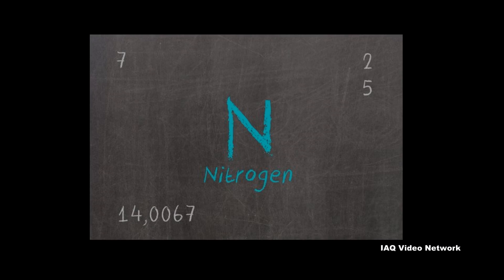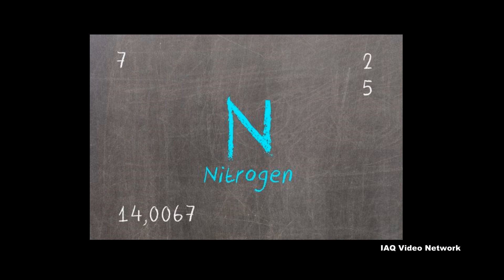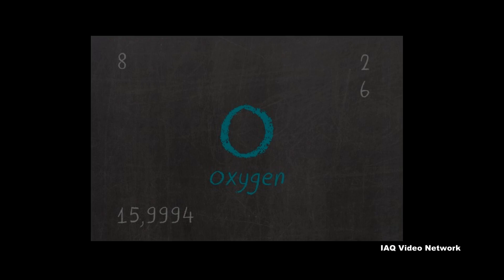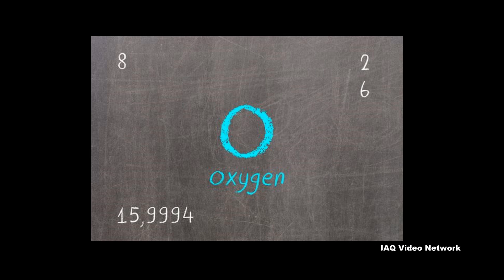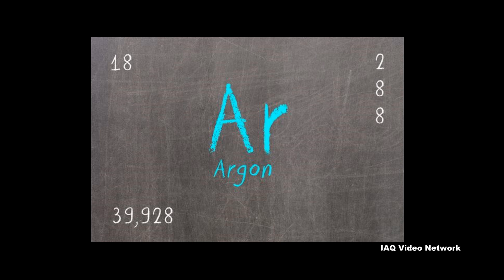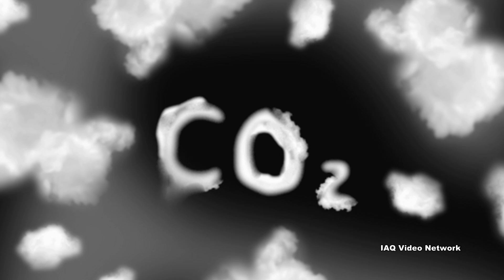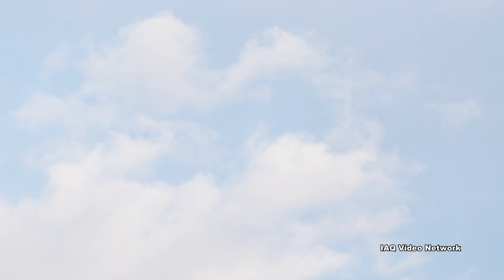The primary component of air is nitrogen at about 78%. Nitrogen is followed by oxygen at approximately 21% and argon at almost 1%. Carbon dioxide, which many people recognize as a greenhouse gas, makes up only about 0.04%.